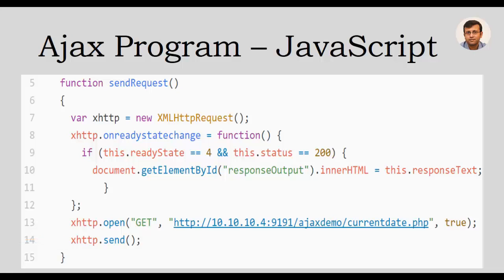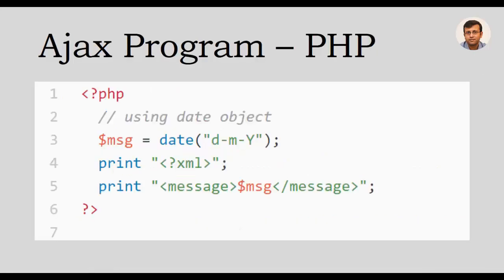The URL used in the open method has an IP address, a directory, and finally the server-side web program 'currentdate.php'. This is a simple PHP program which uses PHP's date function to retrieve the current date and then uses the print function to output the response.